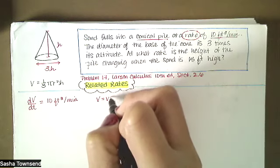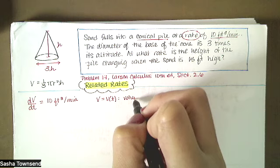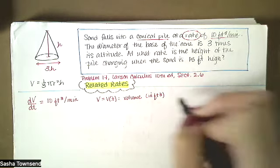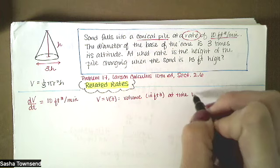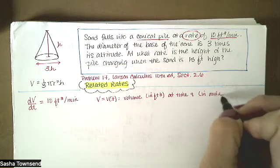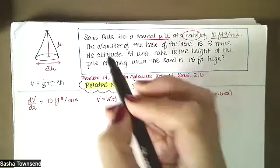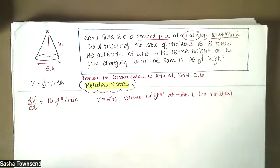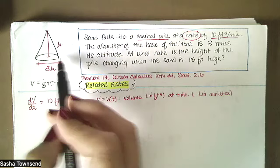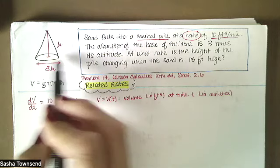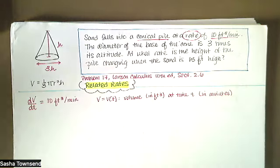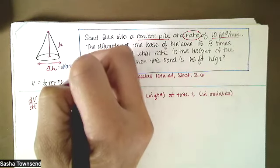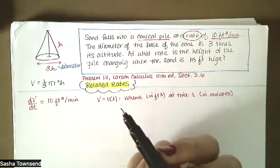So we know that V is a function of time — that's volume in cubic feet at time t in minutes. Then we know the diameter of the base of the cone is three times its altitude. The altitude is the height, and the diameter is the distance all the way across the circle at the base. So we know that diameter is three times the height.